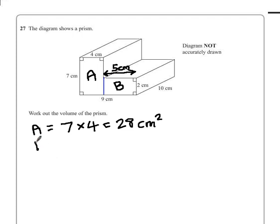Now we can find the area of shape B. We multiply 5 by the height 2, which is going to give us an area of 10 centimeters squared.